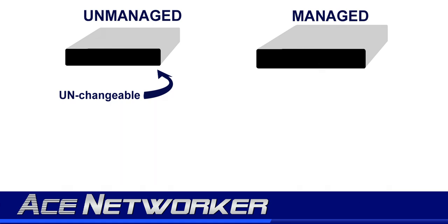An unmanaged switch is a Layer 2 switch hardware component that's usually plug and play. You cannot change the configuration on it or alter how it handles traffic coming and going through it. You can't change the VLAN configuration — in fact, most unmanaged switches don't really have VLANs. You can't change how it handles traffic, whether it prioritizes certain types of traffic, or blocks certain types of traffic. Those configuration changes cannot be made on an unmanaged switch.